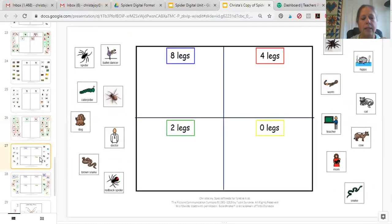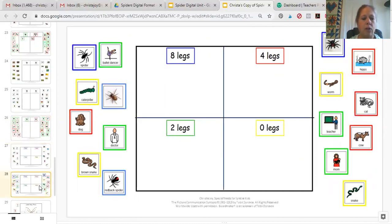We then have an activity where we're sorting things by number of legs. So we have eight legs, four legs, two legs, and zero legs. This one uses symbols but I did include this color-coded version as well.